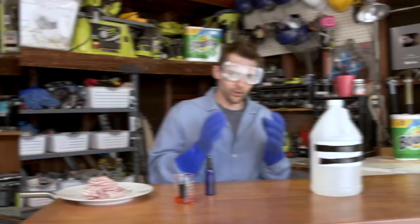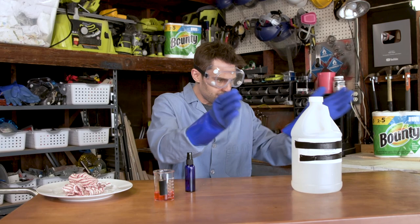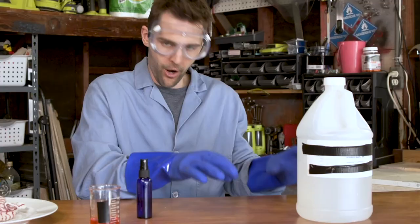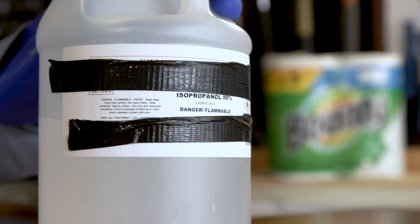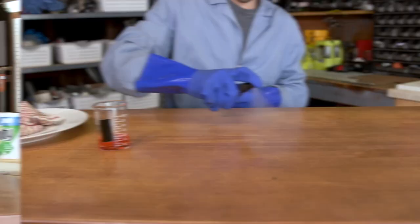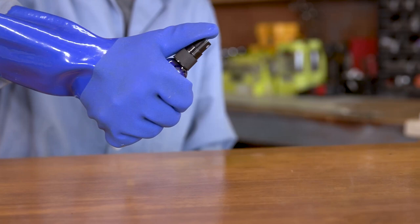The first step is we need to disinfect the surface that we're going to be using because we're really concerned about the bacteria that's in the dish rag, not necessarily on the surface already. So I'm going to put this 99% isopropyl alcohol into this spray bottle. We're just going to let this air dry and disinfect the surface.